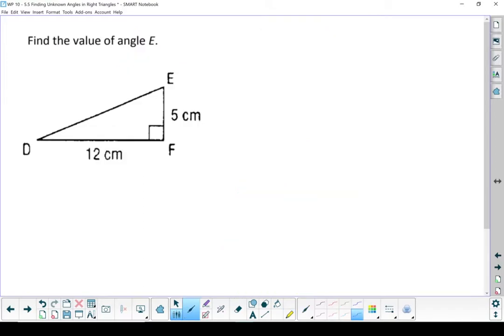Last example. Find the value of angle E. That's my angle E. That's the angle I'm looking for. I'm looking for that angle, so I'm going to label all my sides. I'm going to write down SOH CAH TOA. All right, let's figure out which one this is.